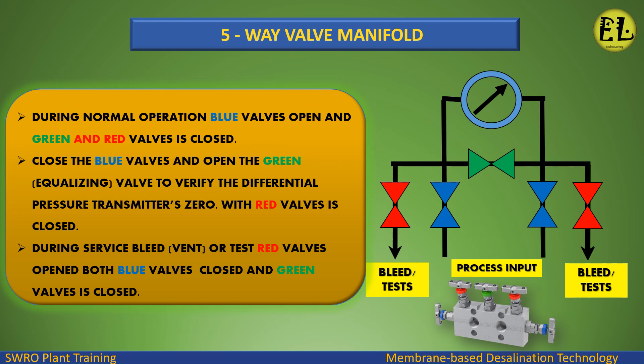During normal operation, the blue valves are open and the green and red valves are closed. Close the blue valves and open the green equalizing valve to verify the differential pressure transmitter's zero. During service — bleed, vent, or test — the red valves are open, and both blue valves and green valves are closed.